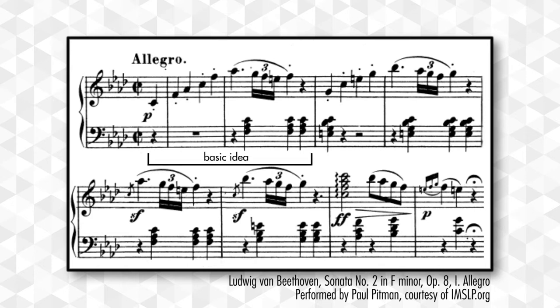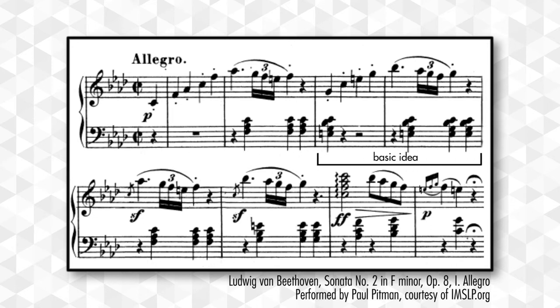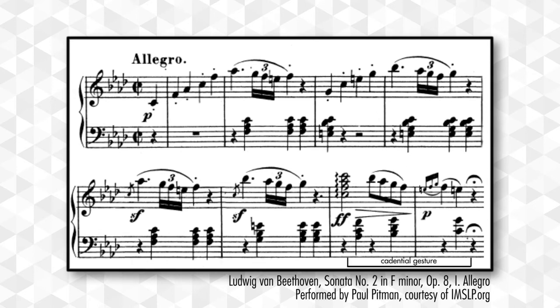So in these first two bars, Beethoven sets up a musical idea with a bunch of short notes leading up to a twirling turn figure: up, up, turn, release. He does the same thing a little higher: up, up, turn, release. He does the same thing again, but basically in double time by only doing the turn figure: turn, release, turn, release — into the cadence.